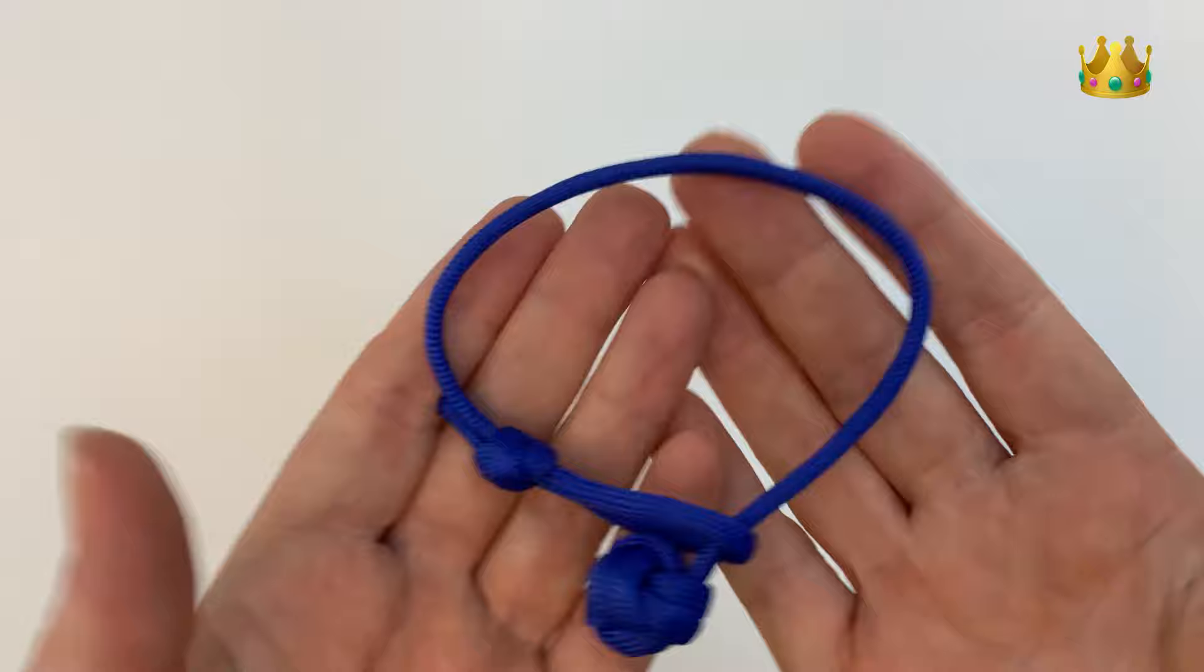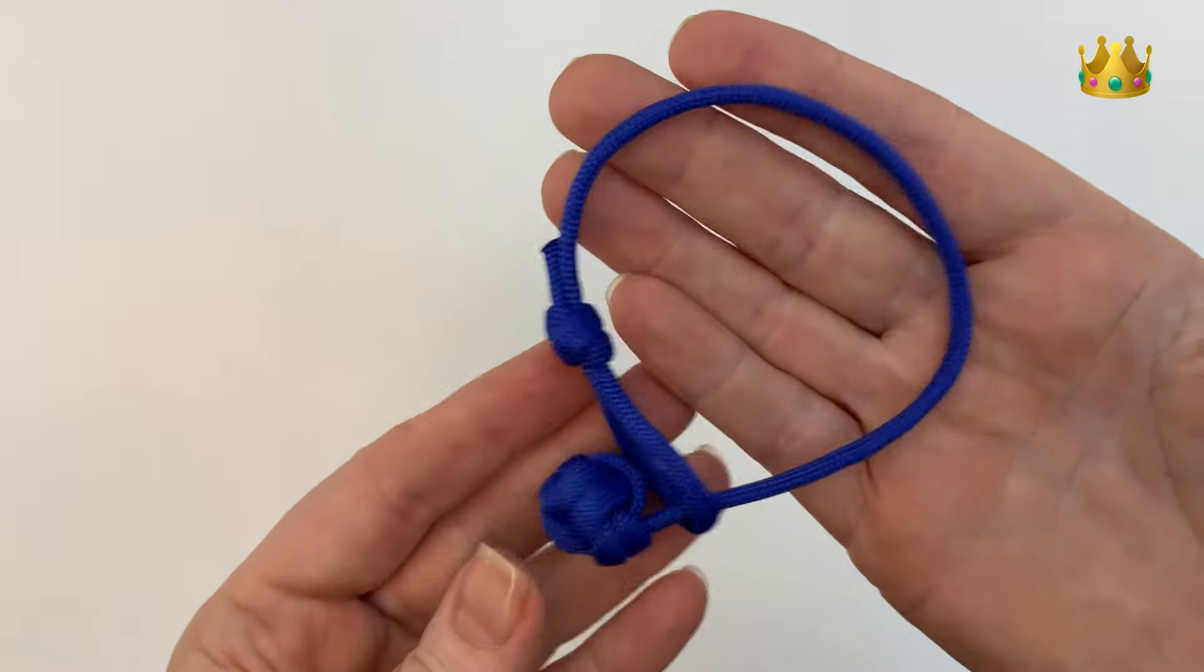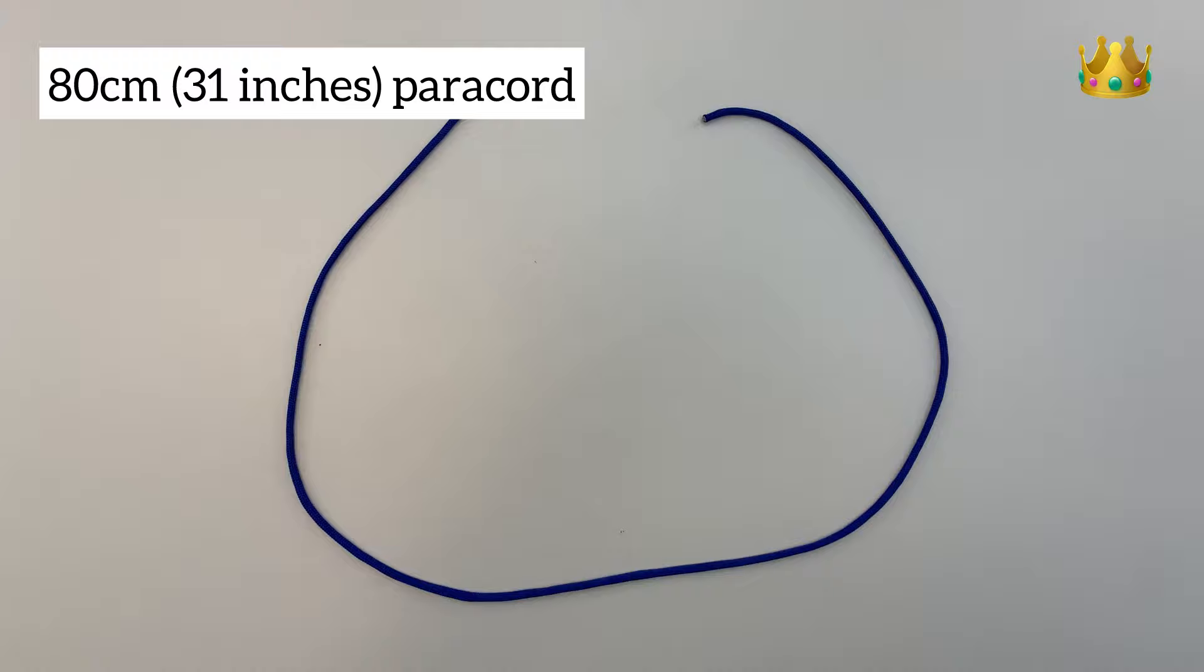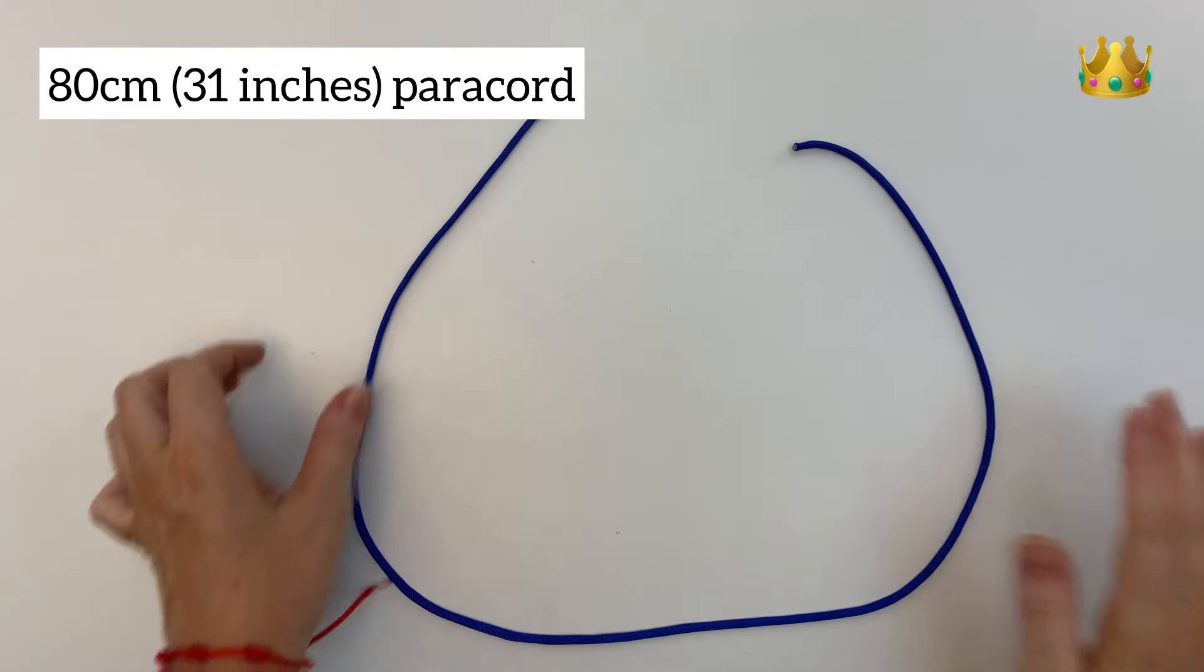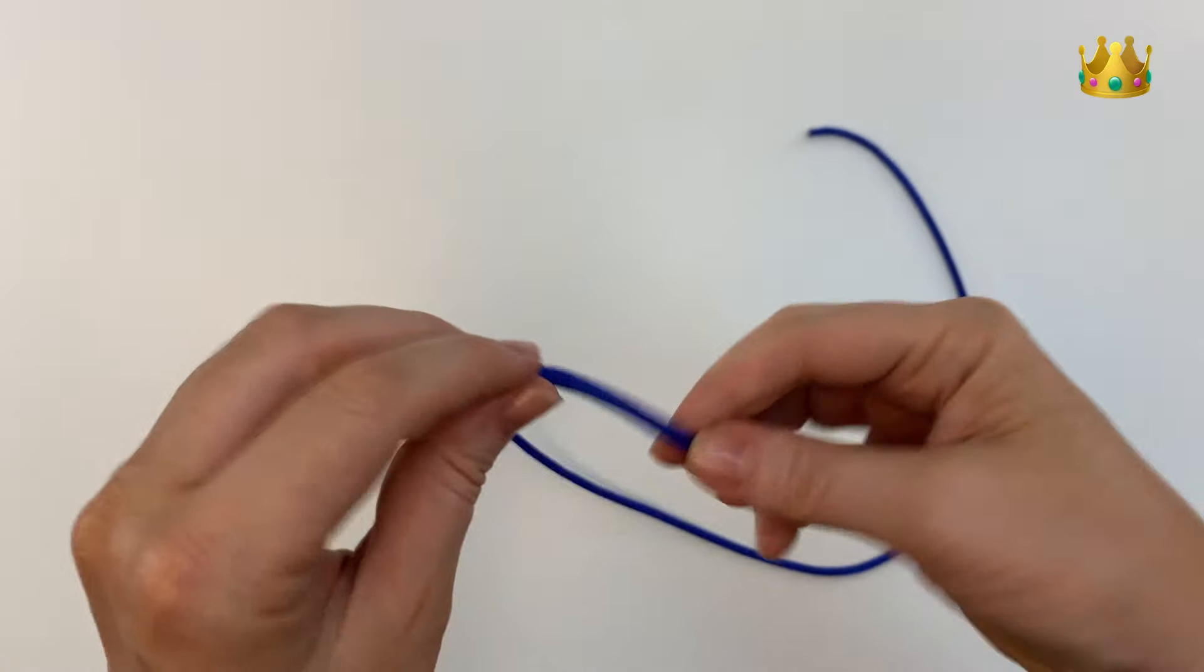It's quite a simple bracelet, you just pop the monkey fist through the loop to secure in place. For our bracelet today we're using 80cm of paracord and first up we're going to make our monkey fist knot.